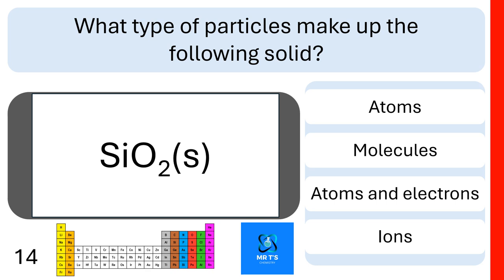Question fourteen: what type of particles make up silicon dioxide solid? Does it have atoms, molecules, atoms and electrons, or ions?